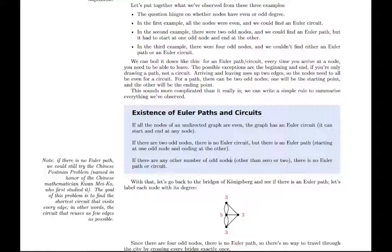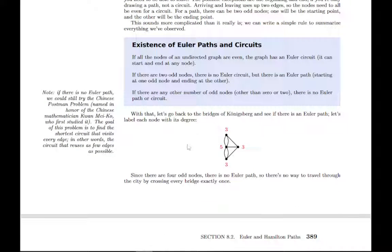But if there are any other number of odd nodes other than zero or two, there's no Euler path or circuit. So all you have to do is count the degree of each node, and then see if there are no odd ones all even, or if there are exactly two odd ones. If those are the cases, then you can figure out whether there's an Euler circuit or path, but any other number of odd ones means there's no Euler circuit or path.